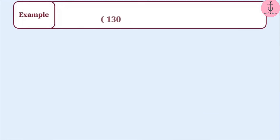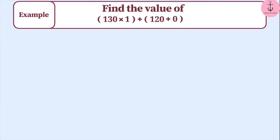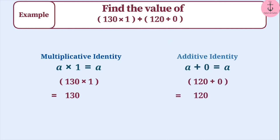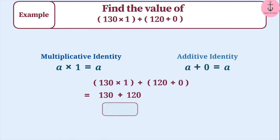Next example: find the value of 130 multiplied by 1 plus 120 plus 0. To solve this, we need to understand both the multiplicative identity and the additive identity. Multiplying 130 by 1 gives the same whole number, that is 130. Similarly, when 120 is added to 0, we get the same number, 120. Therefore, 130 plus 120 is equal to 250, which is the solution. Such examples can be solved easily by understanding the multiplicative identity and the additive identity.